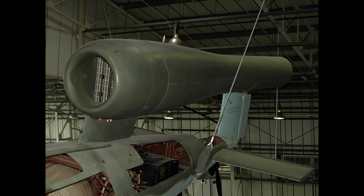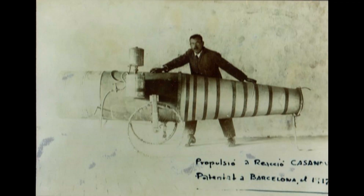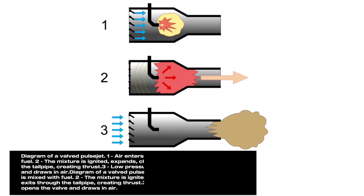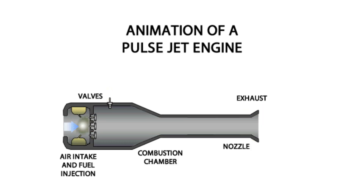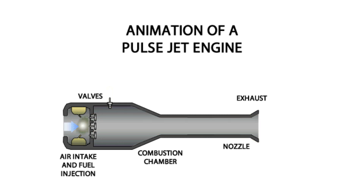Pulse jets are mechanically simple devices that in a repeating cycle draw air through a no-return valve at the front of the engine into a combustion chamber and ignite it. The combustion forces the exhaust gases out the back of the engine, producing power as a series of pulses rather than as a steady output — hence the name.